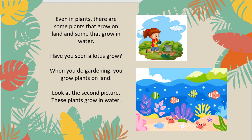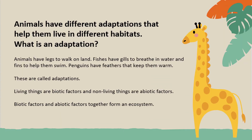When you do gardening or grow plants on land, look at the second picture — these plants grow in water. Animals have different adaptations that help them live in different habitats. Animals have legs to walk on land. Fish have gills to breathe in water and fins to help them swim. Penguins have feathers that keep them warm. These are called adaptations.